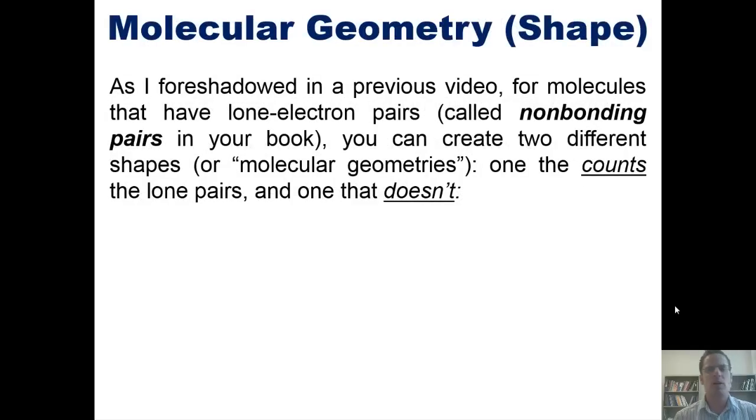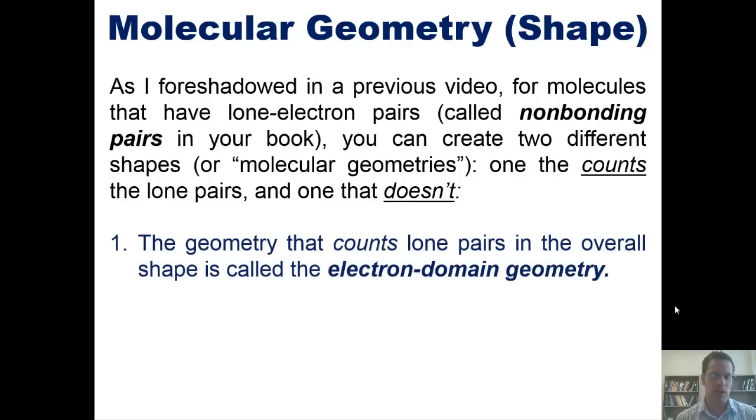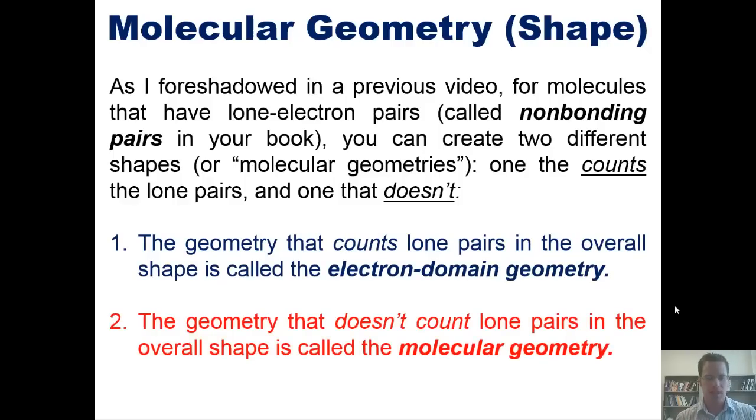Now, as I foreshadowed in a previous video, for molecules that have lone electron pairs, which are once again called non-bonding pairs in our book, you can create two different shapes or molecular geometries, one that counts the lone pairs and one that doesn't count them. The geometry that counts lone pairs in its overall shape is called electron domain geometry. And geometries that don't count lone pairs in the overall shape are called molecular geometries.